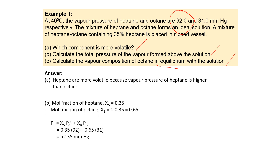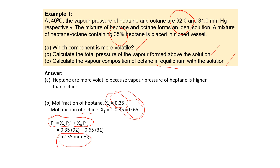For question B, to calculate the total pressure of the vapor above the solution, we need the mole fraction of heptane. From the given information, 35% corresponds to a mole fraction of heptane equal to 0.35. The mole fraction of octane is then 1 minus 0.35, which equals 0.65. Substituting these values into the formula, we get a total pressure of 52.35 mmHg.